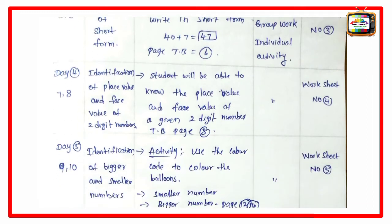Day 4, periods 7-8, which are the identification of place value and face value of two-digit numbers. Student will be able to know the place value and face value of given two-digit number. Textbook page number 8, then group worksheet number 4, then individual work.